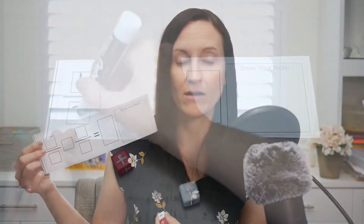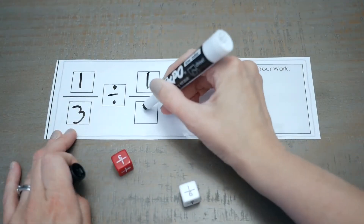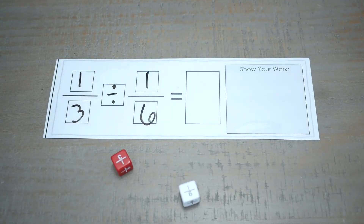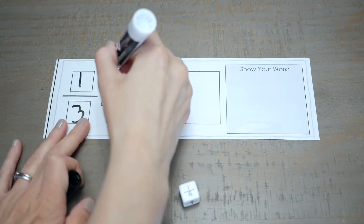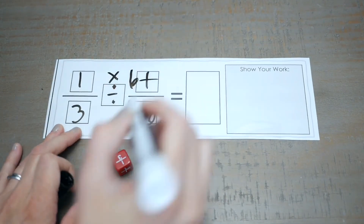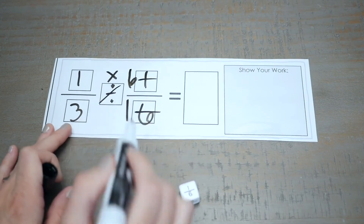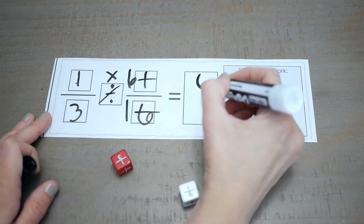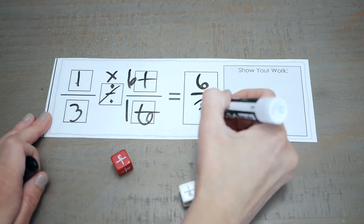In the download I'm going to give you, I have a really neat mat that's super simple — just laminate it, put the dice on it, write the symbol (add, subtract, multiply, or divide), write the answer, wipe it off, and do it again. This makes it really easy for early finishers, for centers, or any other way you want to use it.